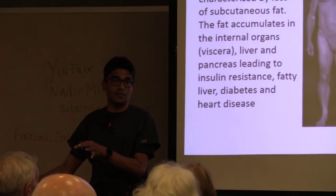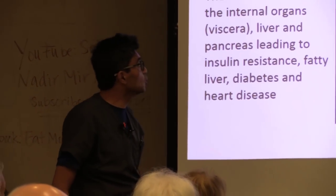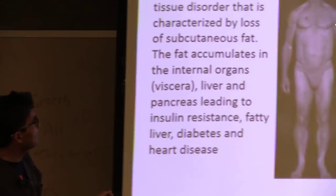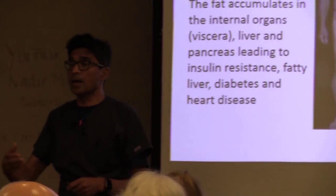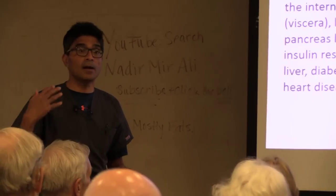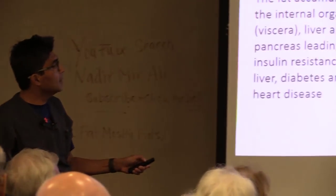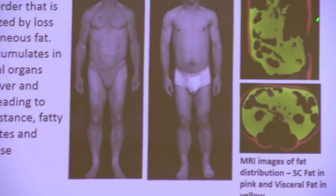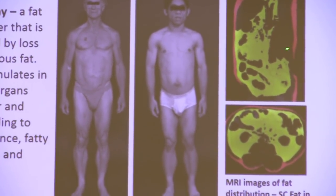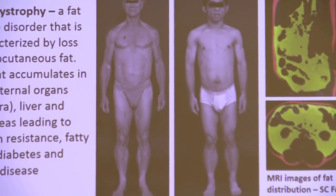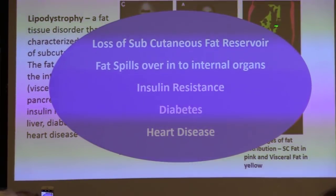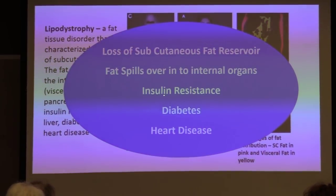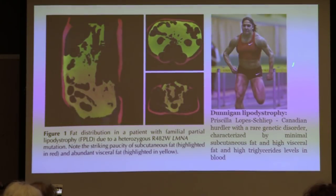My patients teach me a lot. I have several patients who are ripped, with well-defined muscles, yet they have heart disease, they are diabetic, and they are insulin resistant. I was not listening to them before. What we found is that these people have very low levels of subcutaneous fat. On MRI their internal organs are filled with fat because they don't have a high personal fat threshold — they cannot put fat in their subcutaneous tissue. Loss of subcutaneous fat reservoir spills over into internal organs, causing insulin resistance, diabetes, and heart disease.